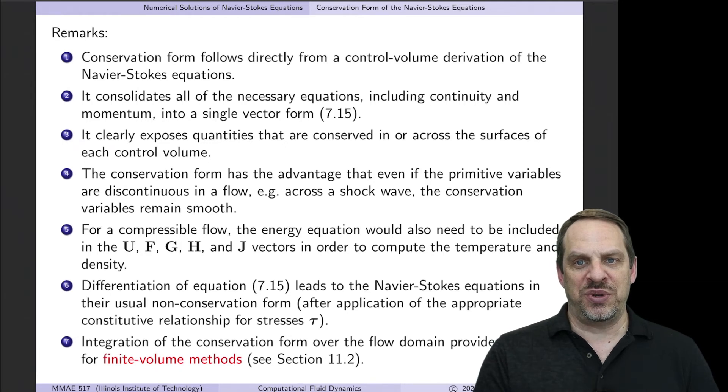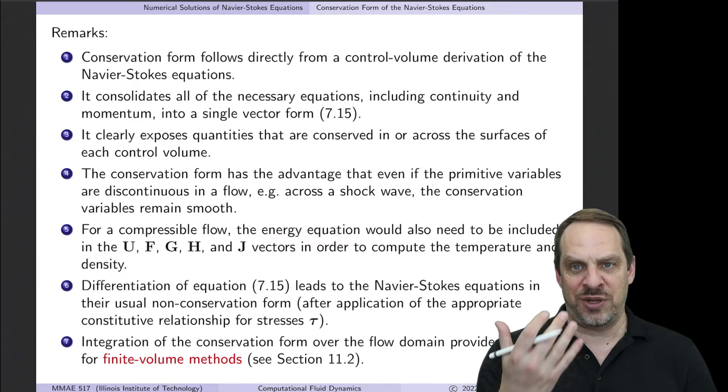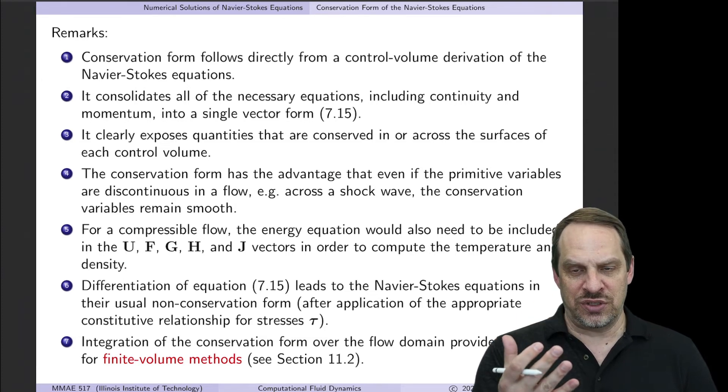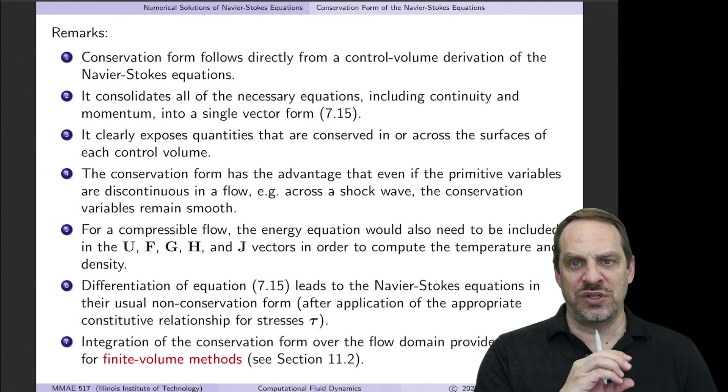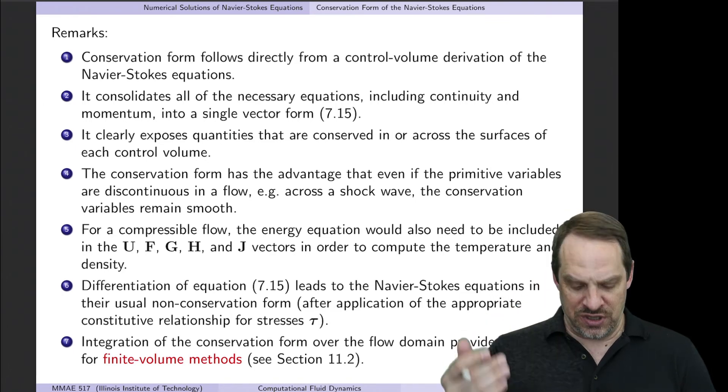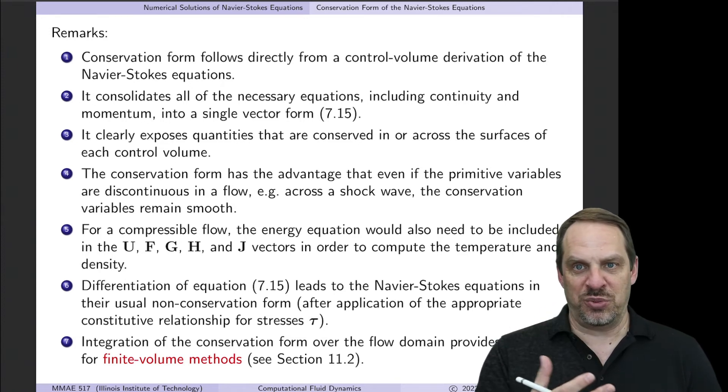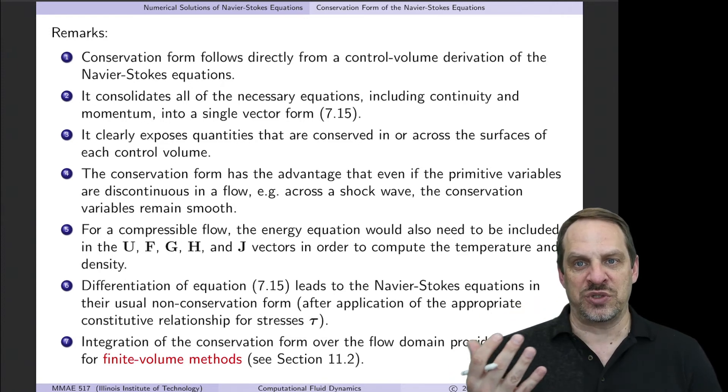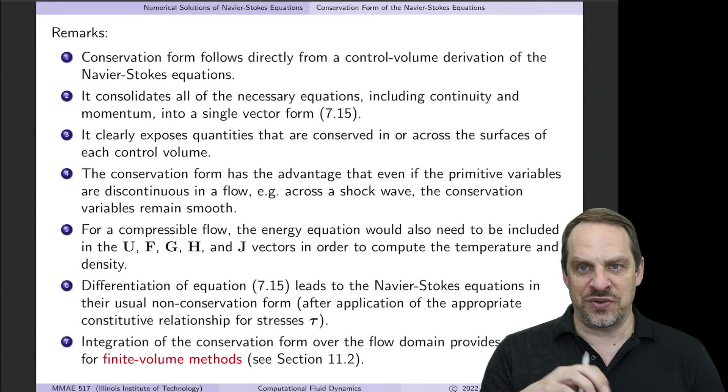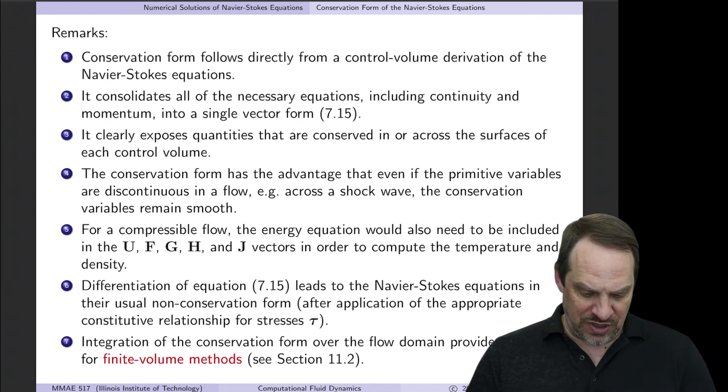Now I've shortchanged this formulation just a bit because if I'm truly looking at a compressible flow, I also need to calculate the energy equation for the temperature. In order to know the density, I need to know the temperature. So I need an additional equation, the energy equation, which looks very similar to the momentum equation without the pressure gradient. That would just simply add one more variable in our vectors, the U, F, G, and H. Now if you were to carry out this differentiation in this conservation form and make the appropriate assumptions for an incompressible flow, you would get back the incompressible form that we've looked at earlier. So everything's completely consistent.